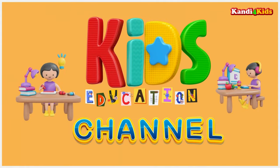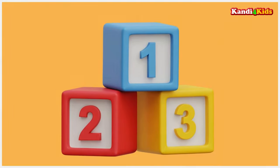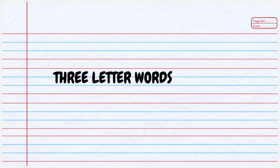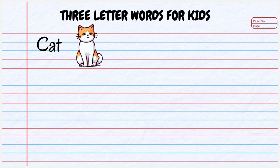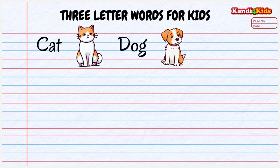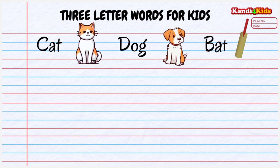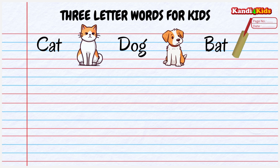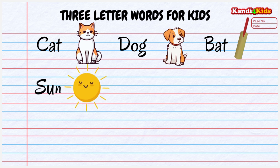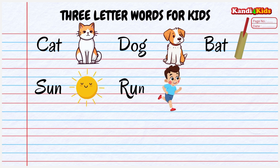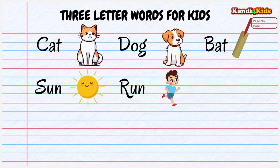Welcome to Kids Education Channel, Candy for Kids. Three letter words for kids. Cat, C-A-T, Cat. Dog, D-O-G, Dog. Bat, B-A-T, Bat. Sun, S-U-N, Sun. Run, R-U-N, Run.